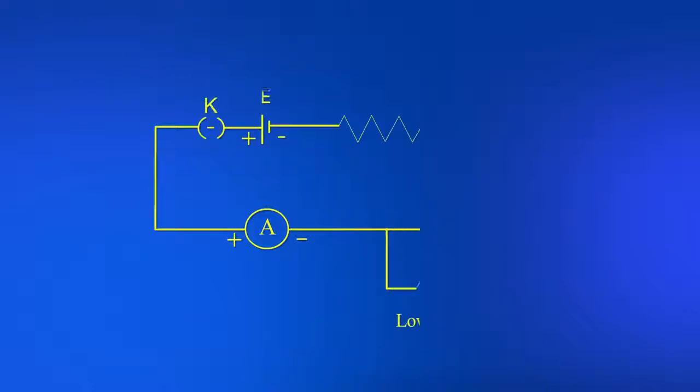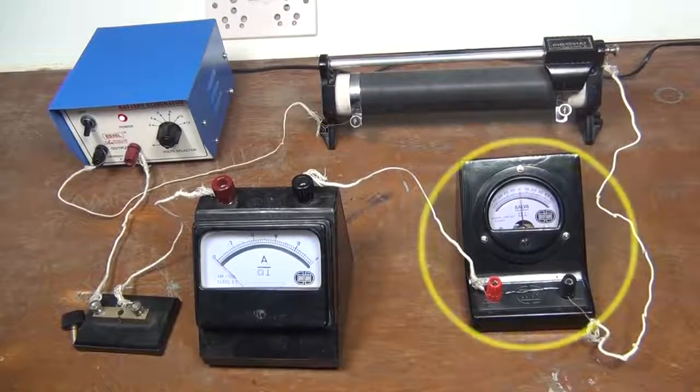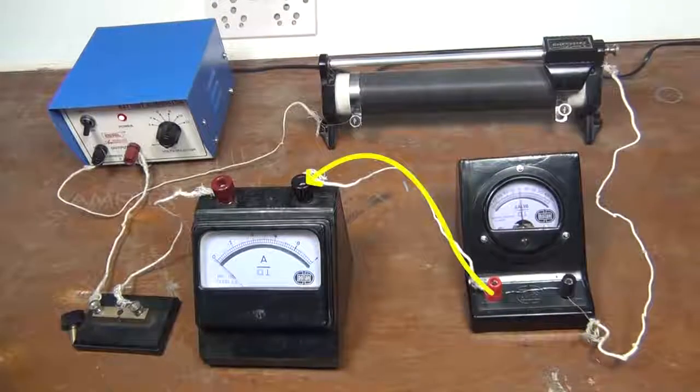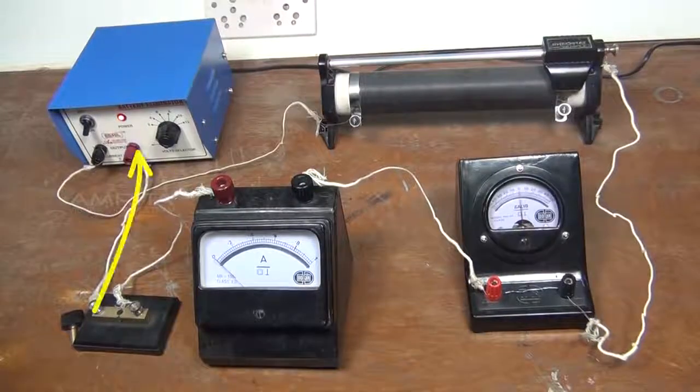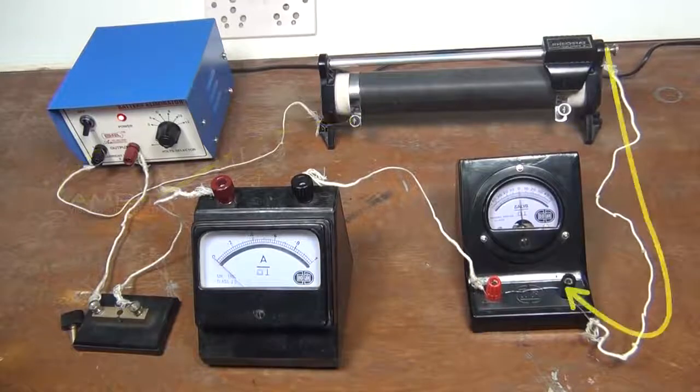Connections are made as shown in the circuit diagram. The galvanometer with shunt resistance is connected in series to a battery through an ammeter, key and rheostat.